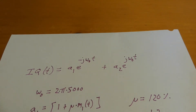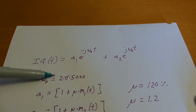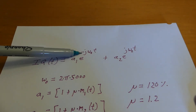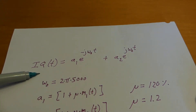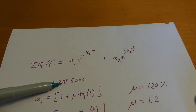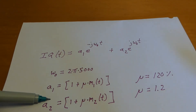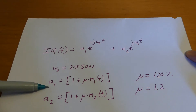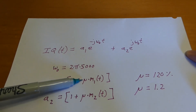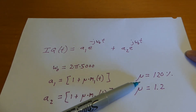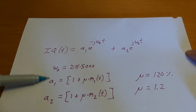Here's the math — the IQ equation in terms of time. It's A1 multiplied by e to the negative j omega-zero t, plus A2 times e to the positive j omega-zero t. In our case, omega-zero equals 2 pi times 5,000 for 5 kilohertz. The A1 and A2 terms are how you encode amplitude modulation. M1 is the first message, M2 is the second message, and mu is what's called the percentage of modulation. I'm going to set it pretty high — 120 percent — so the audio has a nice loud volume and will be very easy to hear.